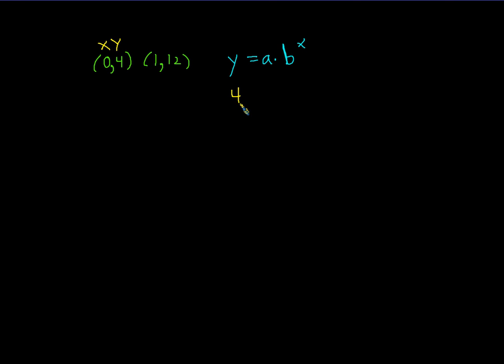We get y is 4. Remember, we don't know a, we'd like to know it. We don't know b, we'd like to know it. And we know x is 0. And again, b to the zero power is simply one. That gives us 4 equals a, because a times 1 is simply a.